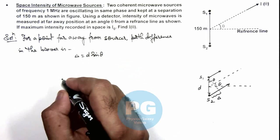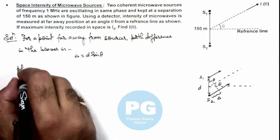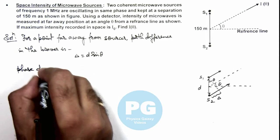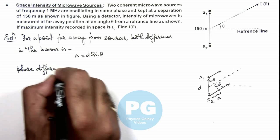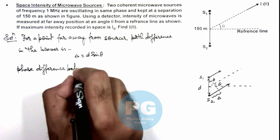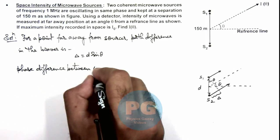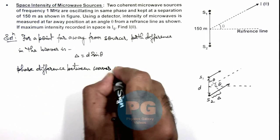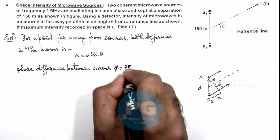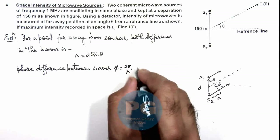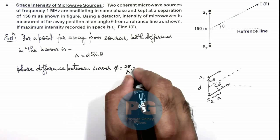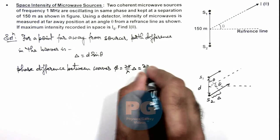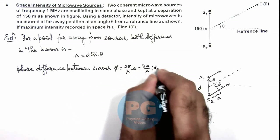So in this situation we can now calculate the phase difference between waves, and that can be given as 2π/λ multiplied by delta. So that is 2π/λ multiplied by d sin theta.